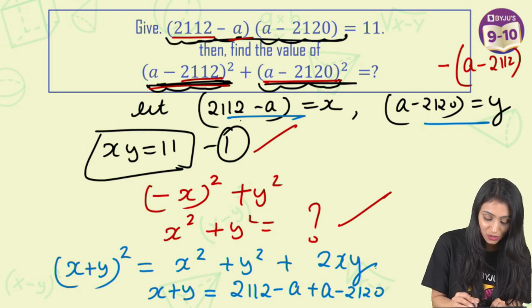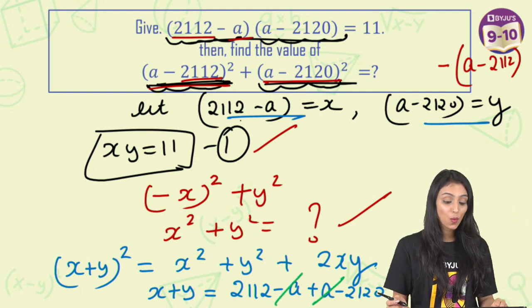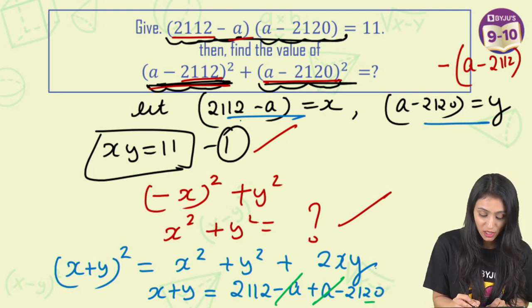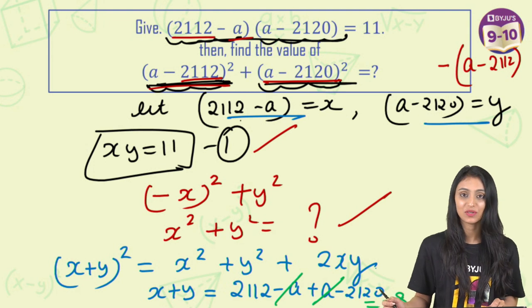What is this going to be? So the a's will get cancelled out and 2112 minus 2120, that's nothing but actually equals to minus 8. So we have this value.